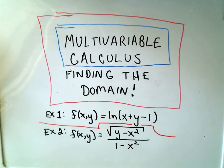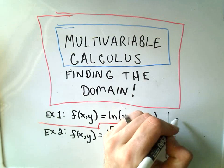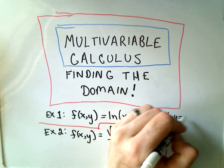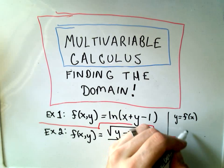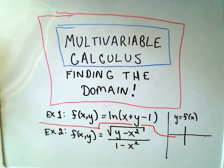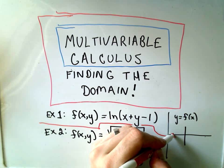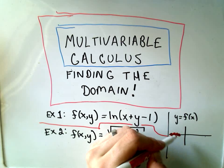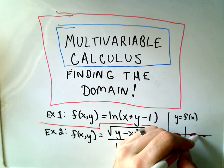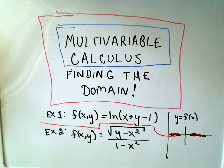The basic idea, if you just have two variables, say if y is a function of x, in that case our domain is always just some set of x-coordinates depending on the function at hand. But in this case we've got two variables, x and y.